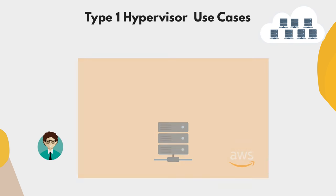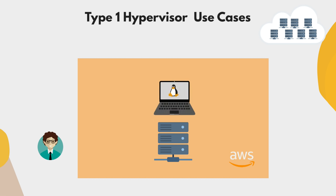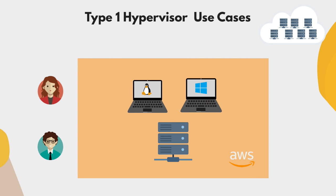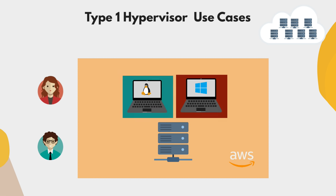When you create a server instance on a cloud platform like AWS, DigitalOcean, or Google Cloud, you're creating virtual machines on a physical server. Other users who create an instance may get a virtual machine on the same exact physical server as yours. But as I said, these VMs are completely isolated — they don't know anything about each other. If someone gets hacked on a VM sharing the same physical server, you won't even know it, because each VM runs in its own isolated environment. They don't share a network, they don't share any resources — they're completely independent.